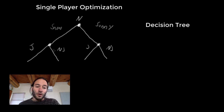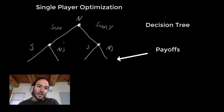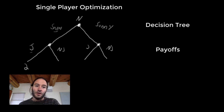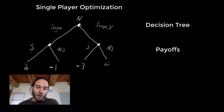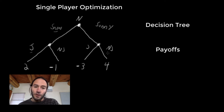Each branch here represents one of your possible decisions — you can either wear your jacket or not wear your jacket. The last thing we can add in here is payoffs. So if it's snowy and you wear a jacket, you get a payoff of two because you're warm. However, if it's snowy and you don't wear your jacket, you get a payoff of negative one because then you're cold. On the other hand, if it's sunny and you wear your jacket, you're going to be too hot, so you might get a payoff of negative three. But if it's sunny and you don't wear your jacket, you're going to be a good temperature, so you'll get a payoff of four. The intuition is clear — you always want to wear your jacket if it's snowy, and no jacket if it is sunny.